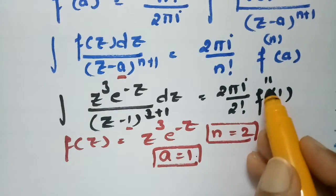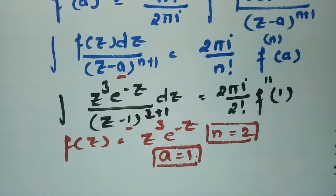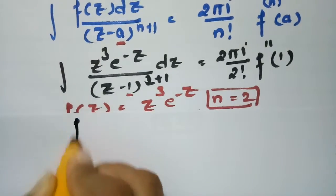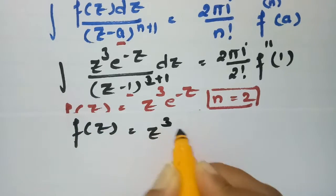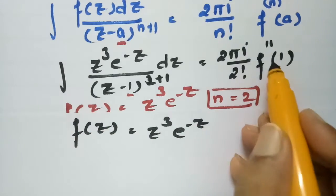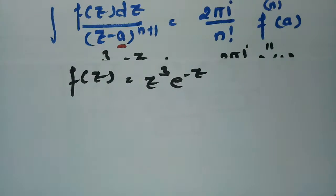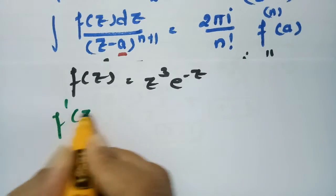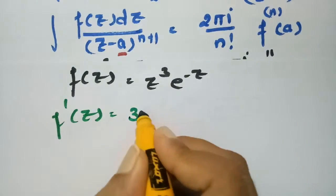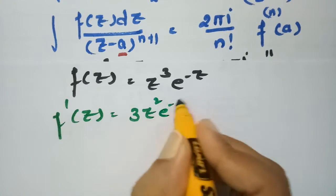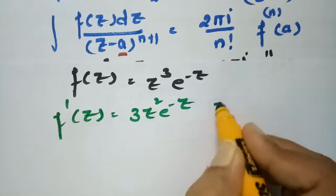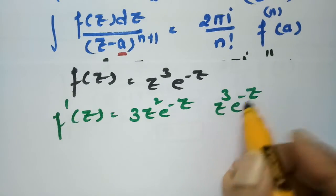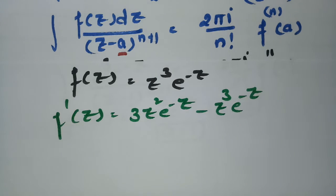f(z) equals z³e^(-z). To find the first derivative we apply the product rule (UV rule). The first derivative f'(z) equals 3z²·e^(-z) plus z³·e^(-z)·(minus 1), giving f'(z) equals 3z²e^(-z) minus z³e^(-z). This is the first derivative.